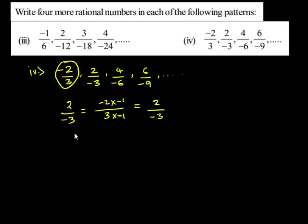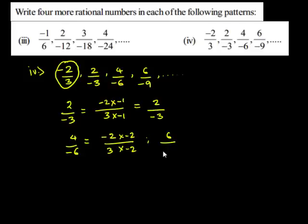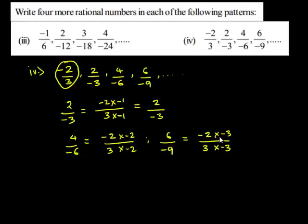Similarly, the third term 4 upon negative 6 is obtained when negative 2 upon 3 is multiplied by negative 2, and the fourth term 6 upon negative 9 is obtained when negative 2 upon 3 is multiplied by negative 3, both in the numerator and in the denominator. This shows that these rational numbers are equivalent rational numbers.